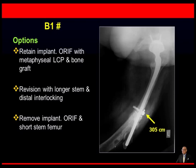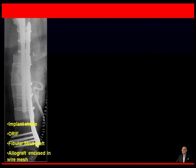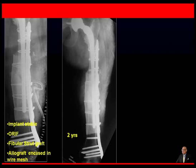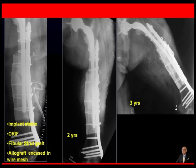Yet another B1 fracture presenting soon after surgery offered three options: retain the implant and do internal fixation with metaphysial locking compression plate and bone graft; revise with a longer stem using distal interlocking; or remove the implant, do internal fixation, and use a shorter stem. We found the implant stable, performed internal fixation with a locking compression plate, used a fibula strut graft, and encased allograft in a wire mesh. The 2-year follow-up was satisfactory; however, this also failed at 3 years with fracture through the plate and the proximal stem — presenting a real challenge.